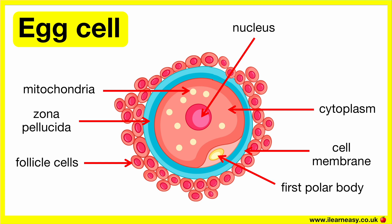In summary, egg cells are adapted for reproduction by being large and nutrient-rich to support early development, with a protective zona pellucida and follicle cells that aid in fertilisation and provide nourishment.